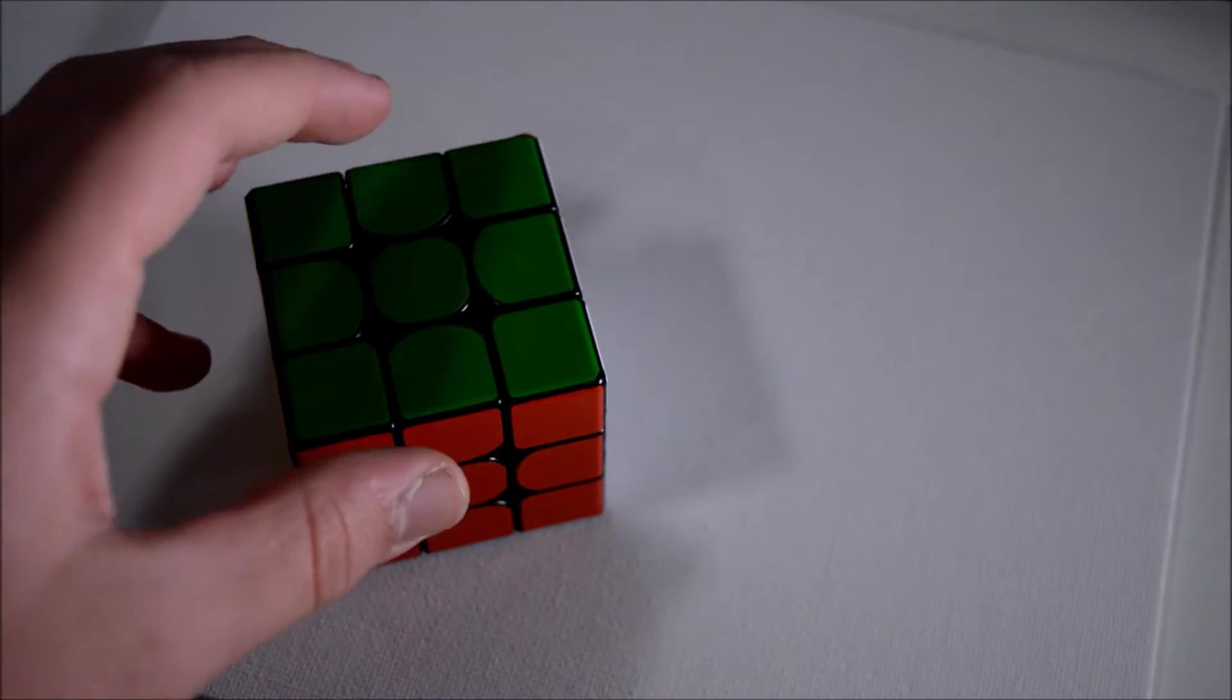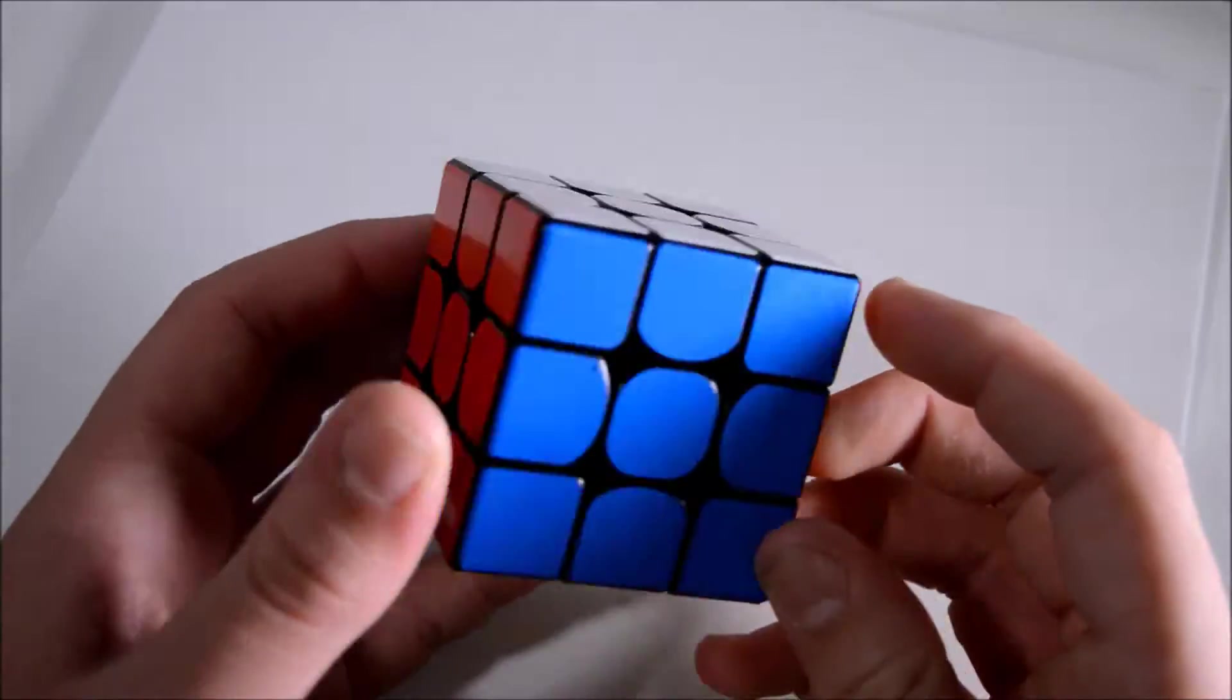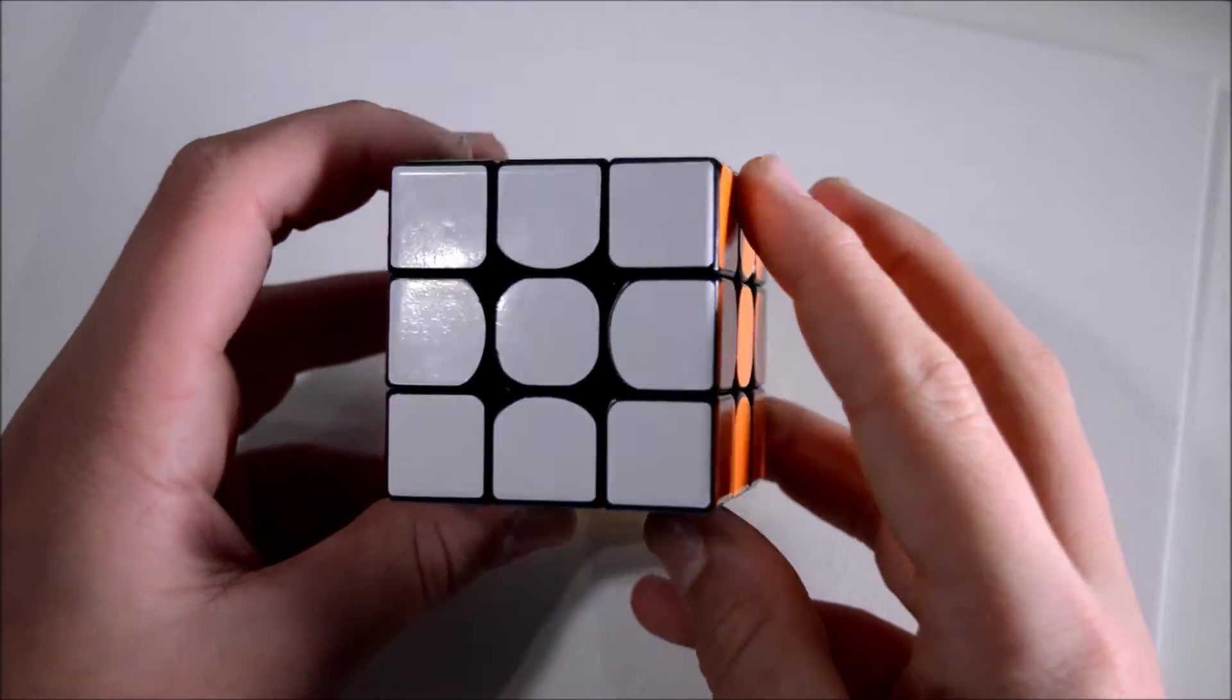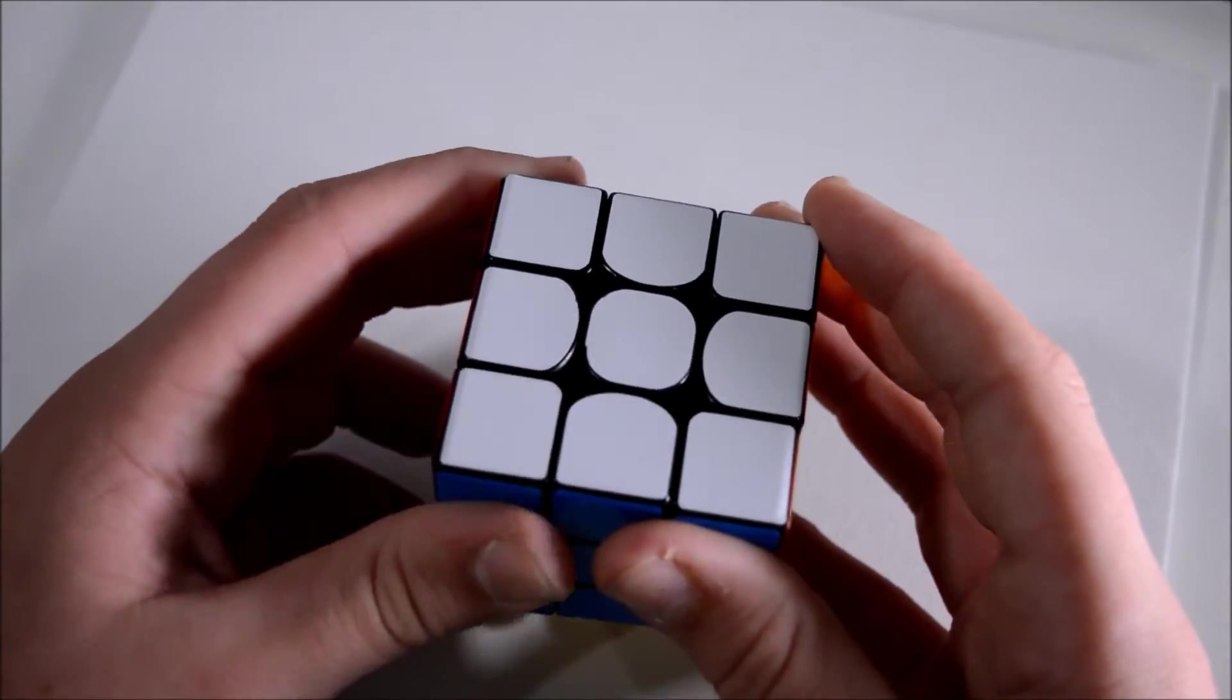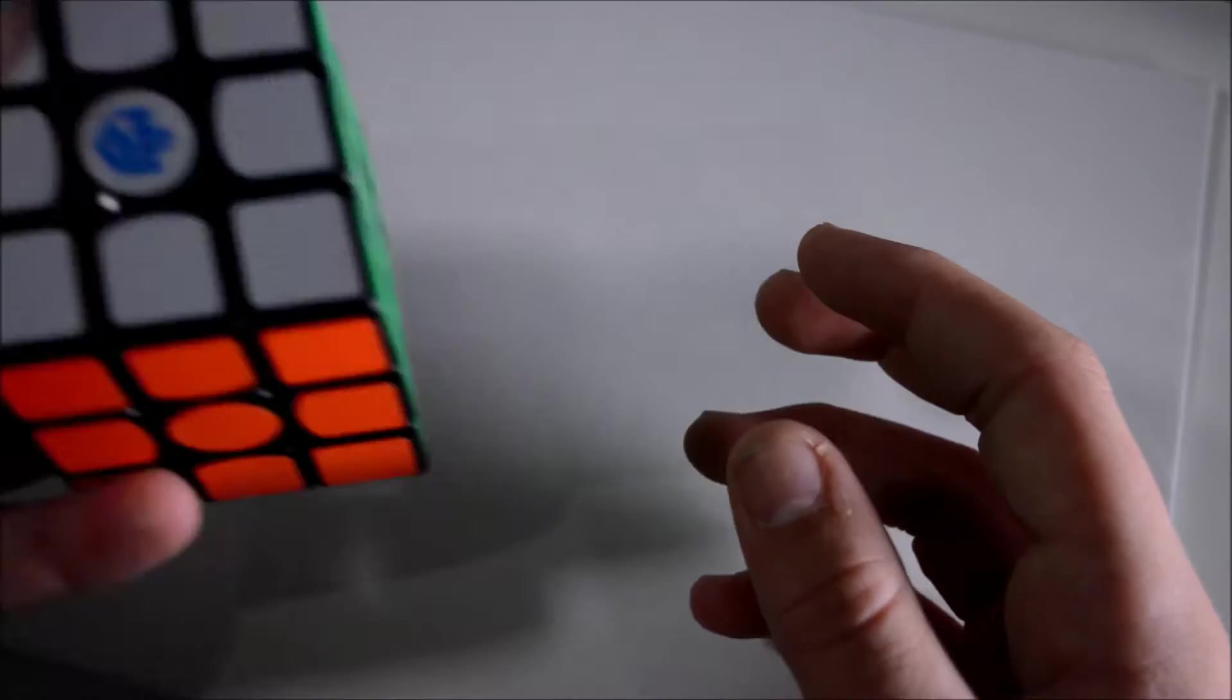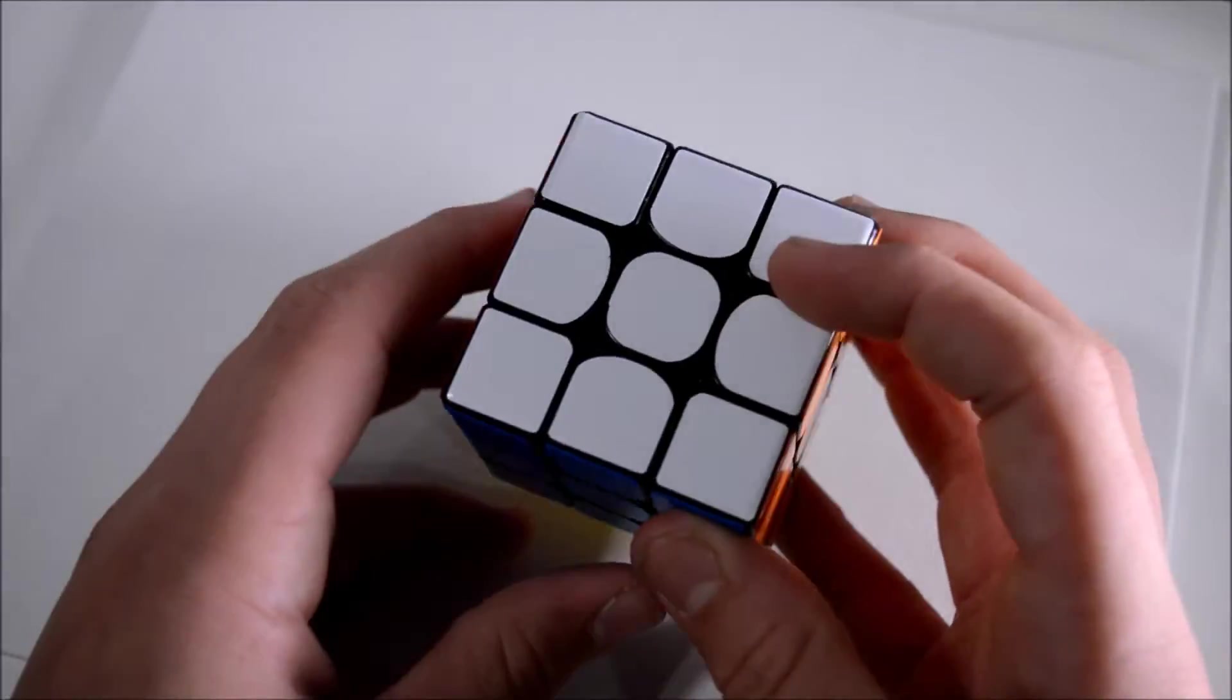First I want to let you guys know why I decided not to make a DIY Weilong GTS tutorial. The first reason is that it's already been made by bigger YouTubers so it obviously wouldn't do that well. Also I looked up on YouTube and there's only one other tutorial on how to make a Magnetic Gans Air but I didn't think it was too well made, so I figured if I made a high quality video a lot of people would want to watch it.